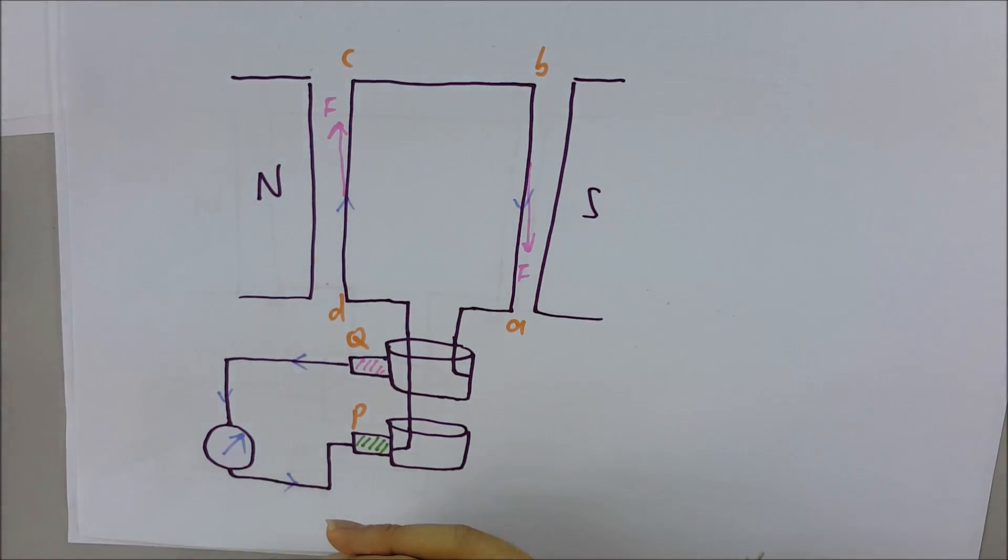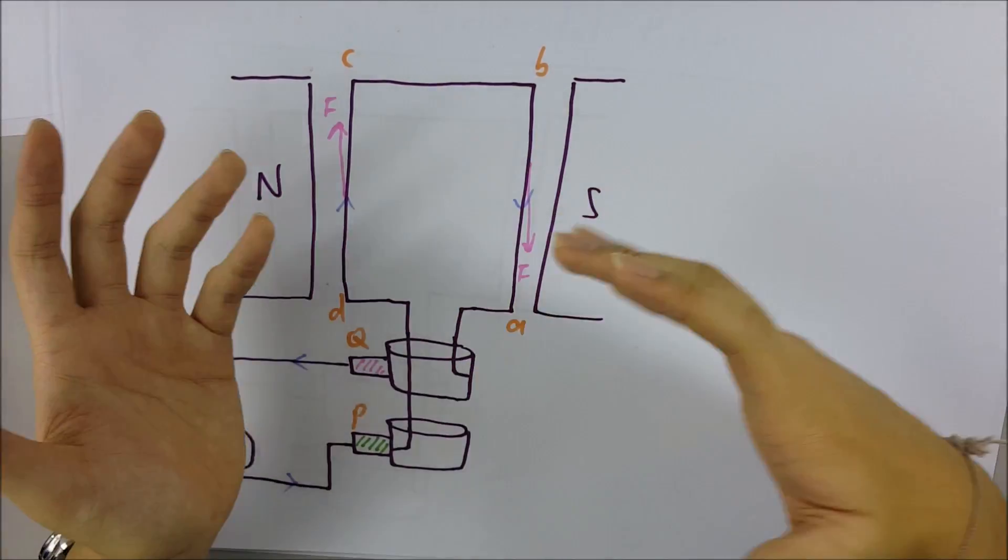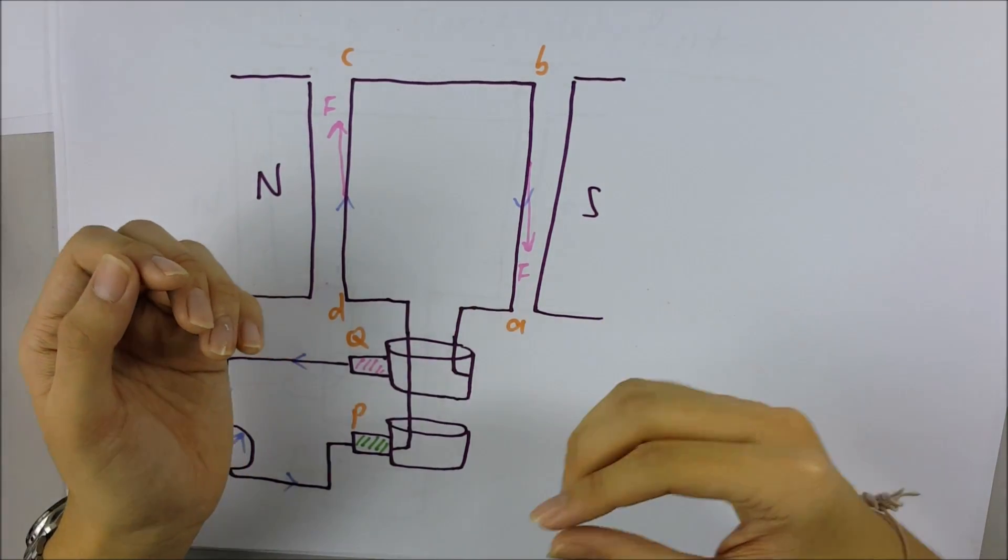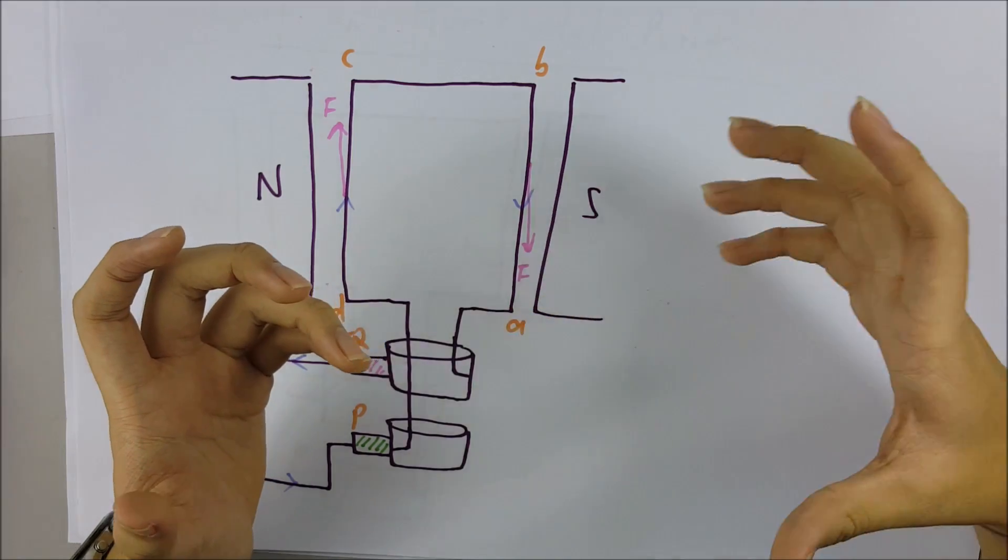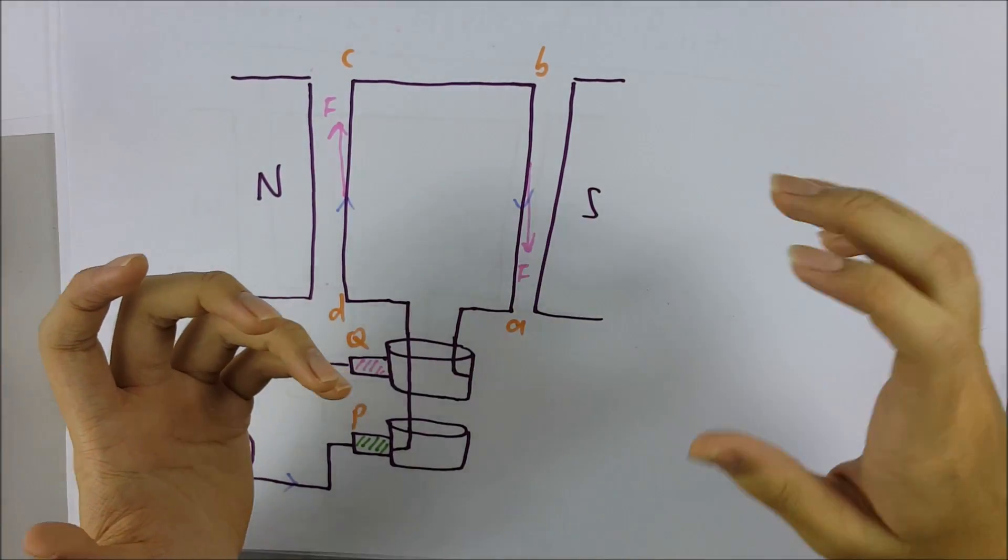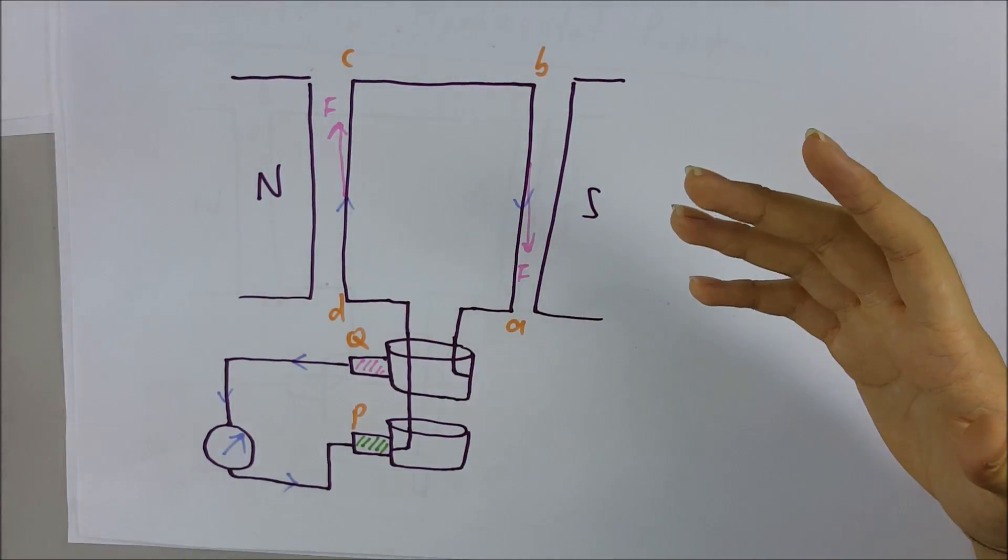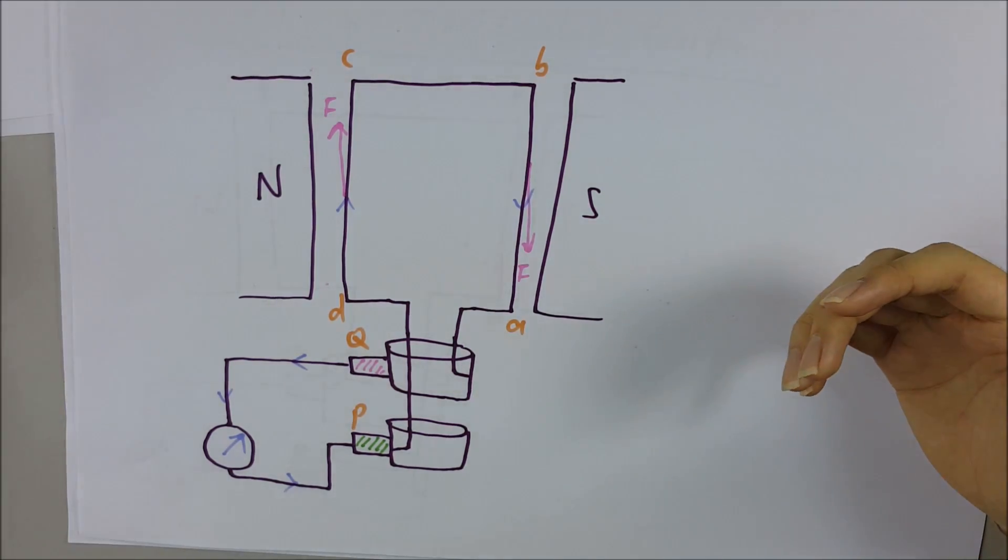Again, no current is induced, but after the vertical position, the current increases again and the whole process is repeated. The coil continues to move and there will be current continuously induced.